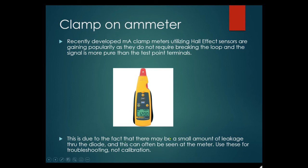There may be small amounts of leakage through the diode, which can sometimes be seen on the meter. Use these clamp meters for troubleshooting, not calibration. They're actually more accurate than test point measurements for current, but you still cannot calibrate from there.